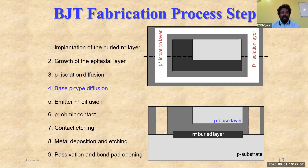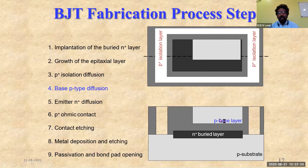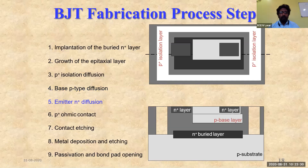After isolation, a P-type base diffusion is created. Each new step involves etching off the previous layer in the target region and depositing the desired material. Here we need the P-type diffusion, so we etch the region and dope it with P-type impurities to form the P-base.